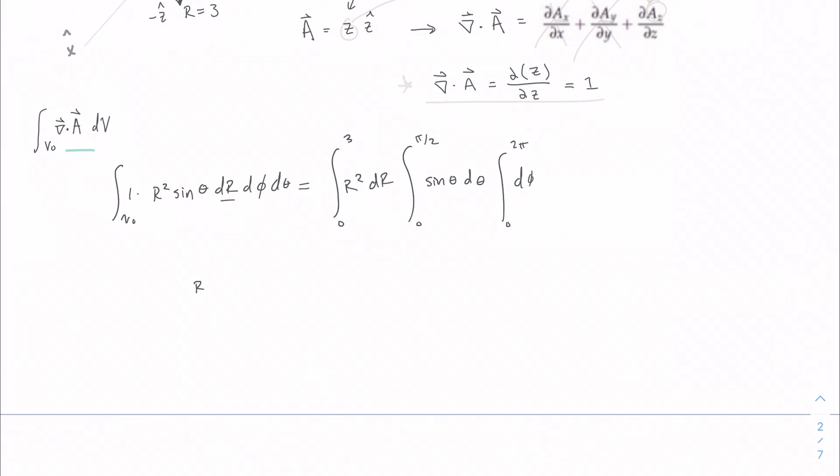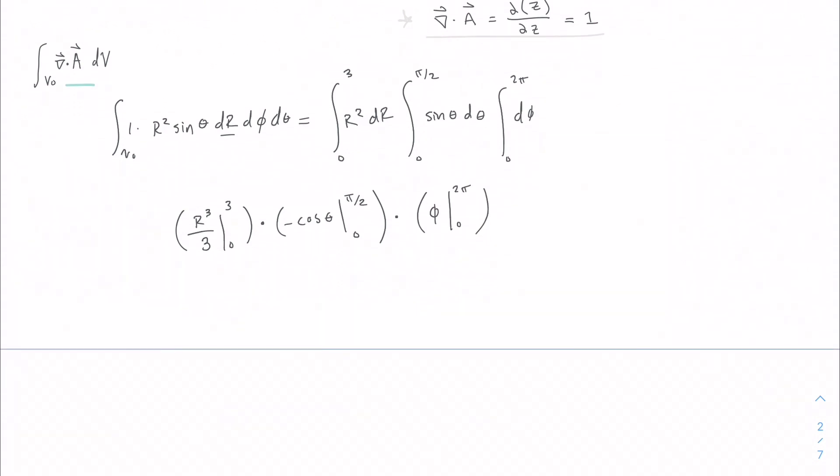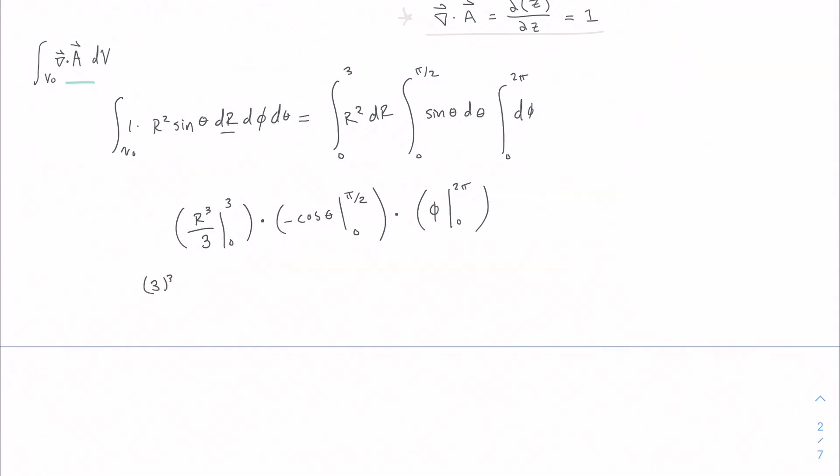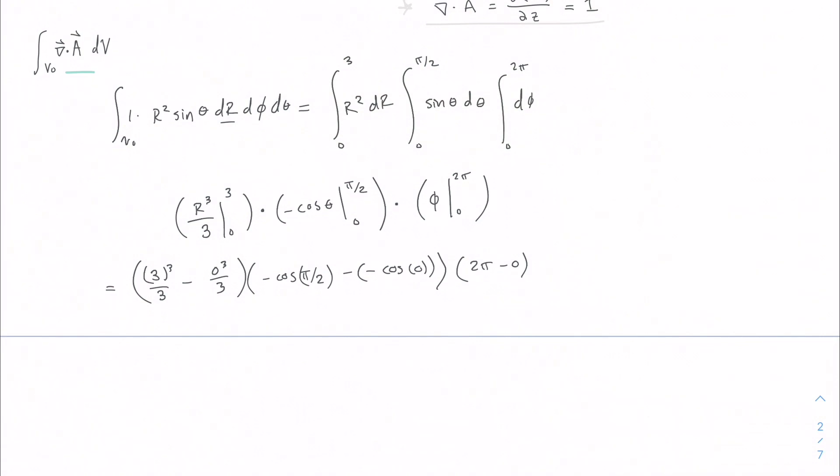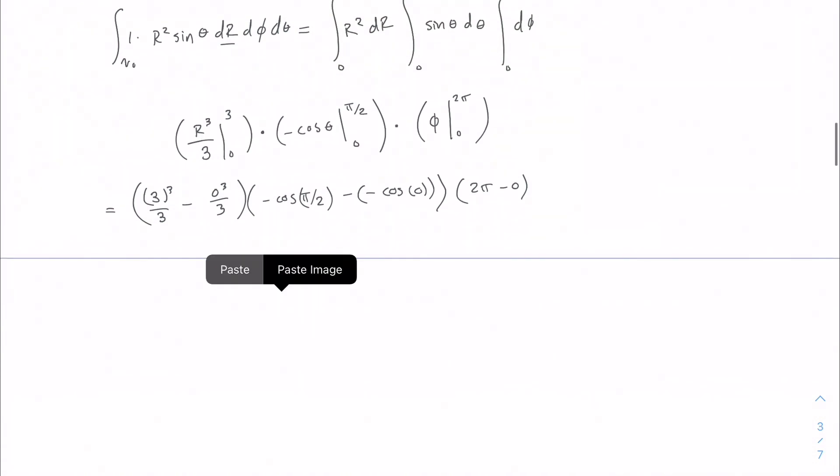So let's go ahead and evaluate these pieces here. So we have r cubed over 3 from 0 to 3, multiplied by negative cosine of theta from 0 to pi over 2, multiplied by theta from 0 to 2 pi. So now we're going to evaluate each of these pieces. So we have 3 to the third over 3 minus 0 to the third over 3, and then we have minus cosine of pi over 2 minus a negative cosine of 0, and then we have 2 pi minus 0. Let's go ahead and simplify that and see if we're going to get our original value of 18 pi.